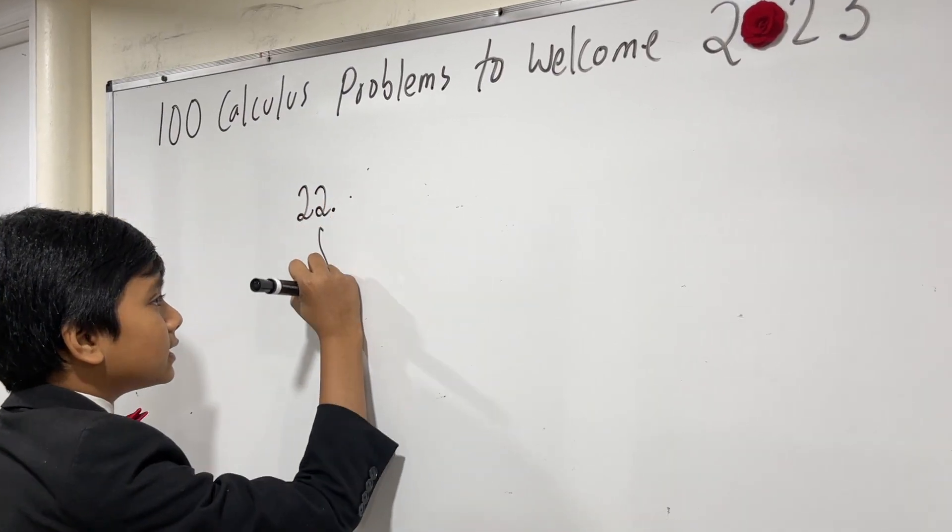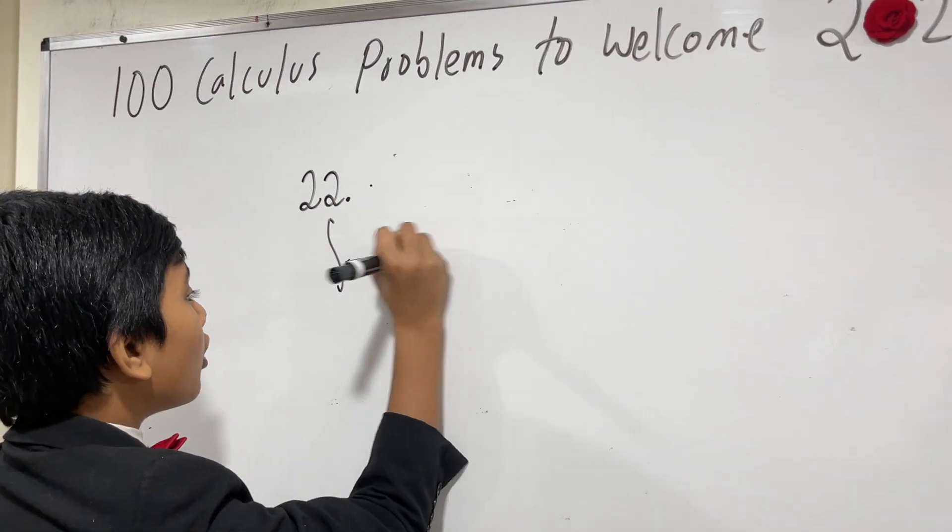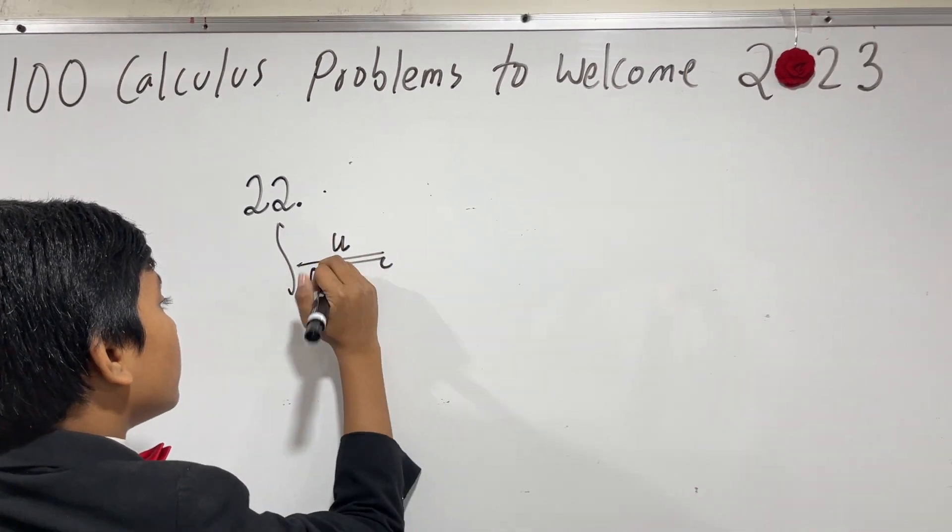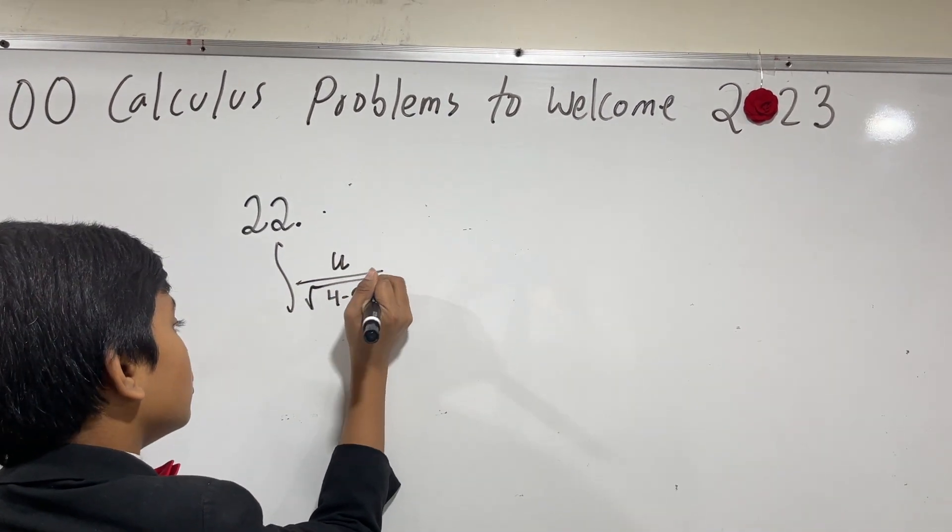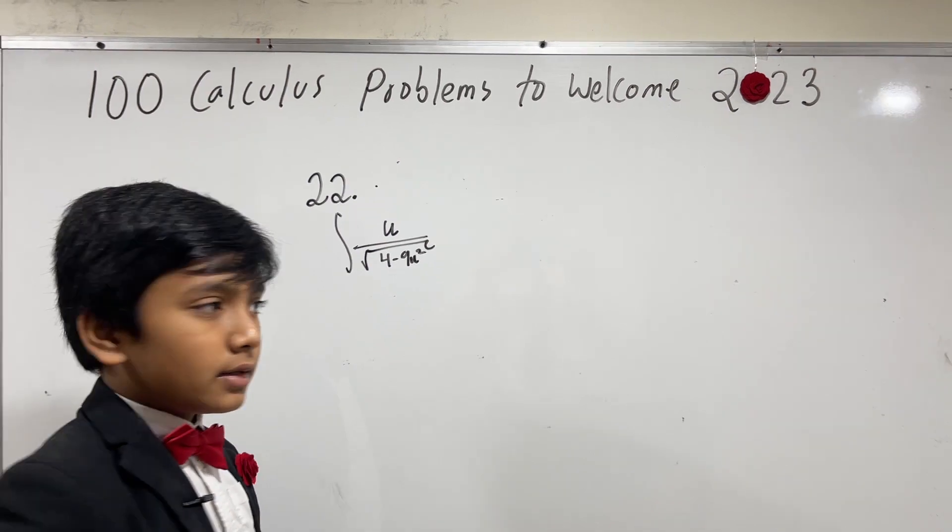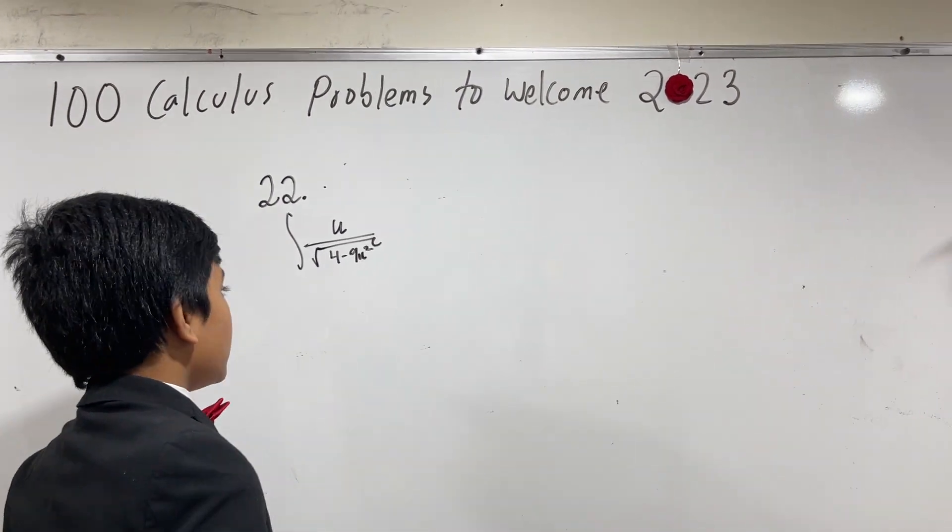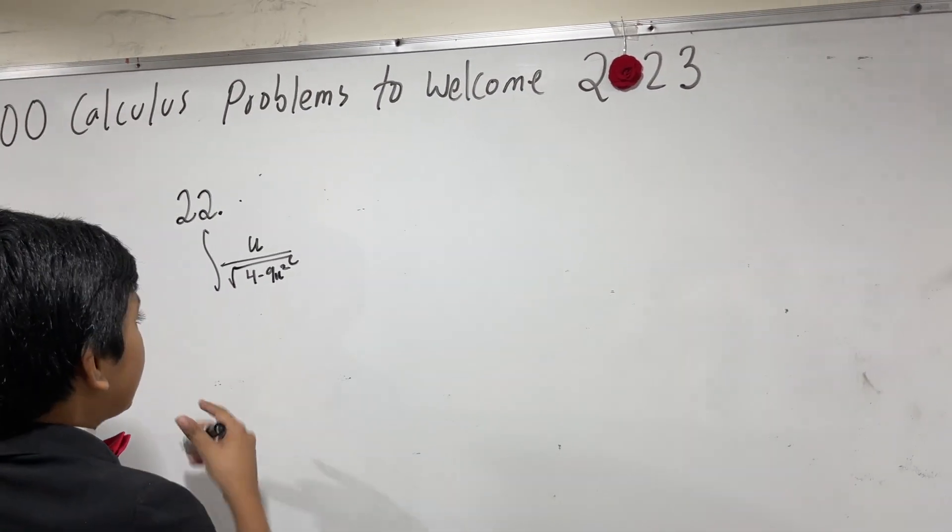It's going to be the integral of u over the square root of 4 minus 9u squared. Now, at first glance, this looks kind of disorienting.